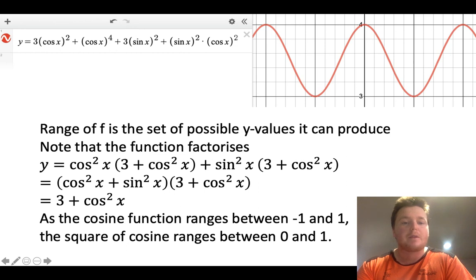So first you need to notice that the function actually factorizes. If we group together some common factor, a common factor appears, and so we actually end up with quite a simple function of just 3 plus cosine squared.